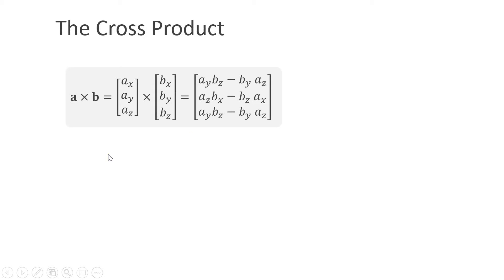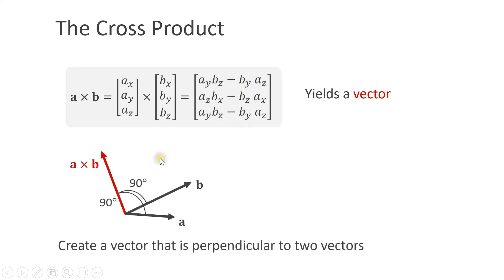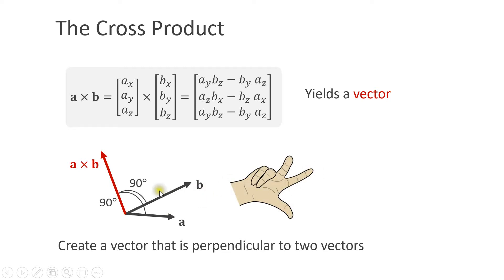The cross product is also an operation between two vectors and is written as a little cross. In contrast to the dot product, the result is a vector. Here are the equations to compute the individual components of the resulting vector. The result a cross b is a vector perpendicular to both a and b. In a right-handed coordinate system, if a points along the thumb and b along the index finger, then a cross b points along the middle finger.